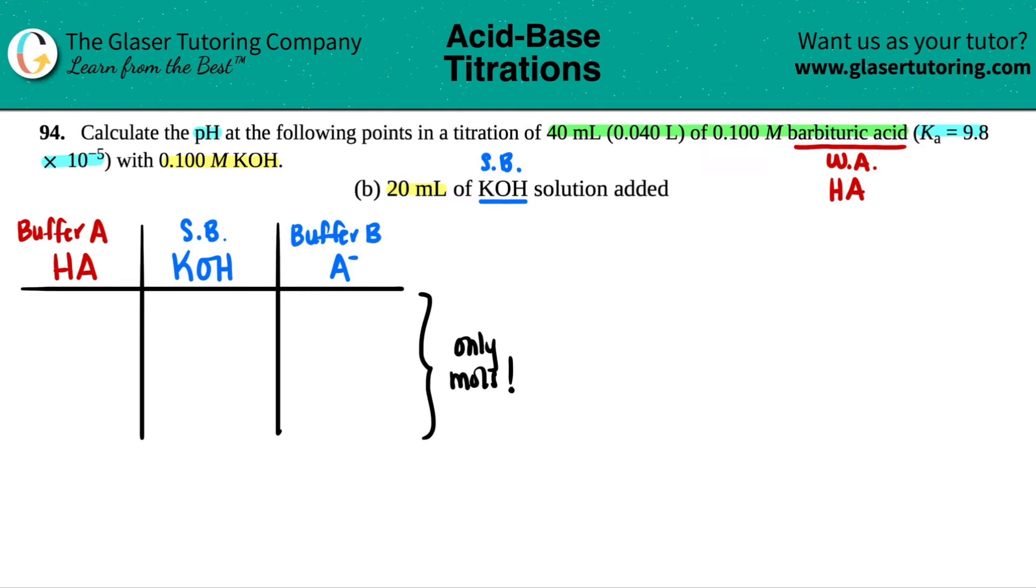So we have to turn all the molarity values that we have into mole values. Doesn't matter which one you start with. Let's start with this barbituric acid. Now they did state that I had a molarity, a 0.1 molar solution of that, and it was in 40 mL, which is 0.04 liters.